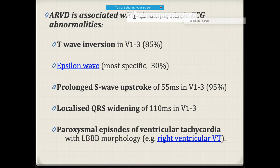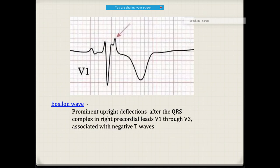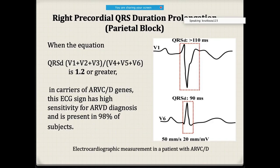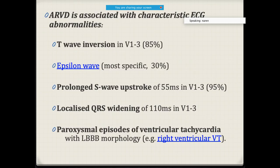Coming to ARVD — arrhythmogenic right ventricular dysplasia. If you look carefully in leads V1 to V3, you will come across T inversion from V1 to V3. Other changes on the ECG include Epsilon waves, which are the most specific sign for this condition, seen in V1 to V3.